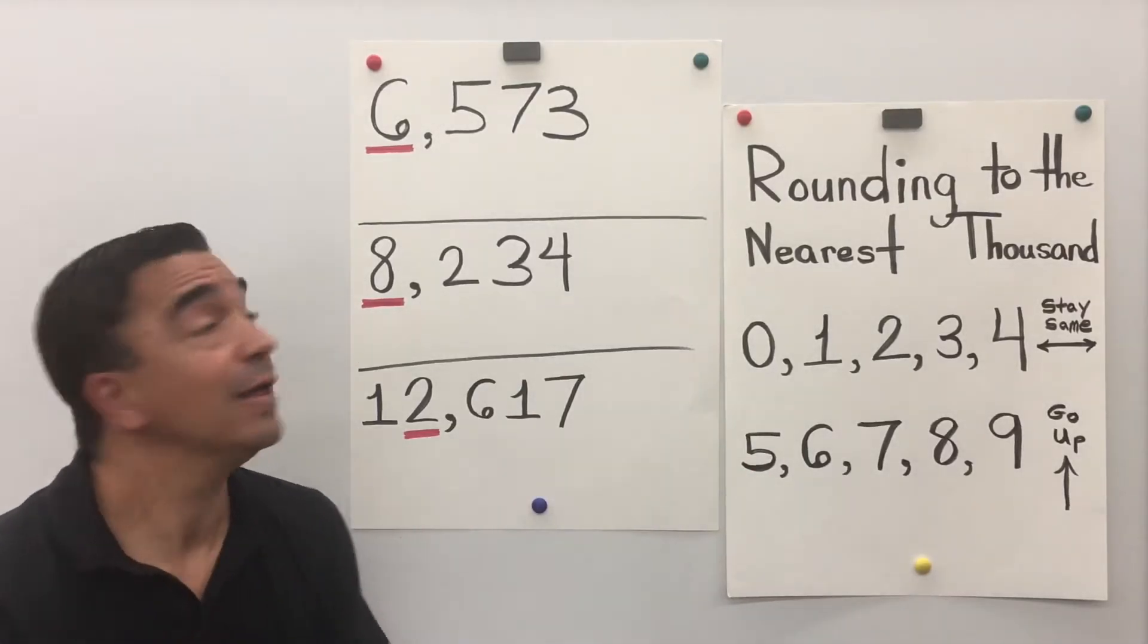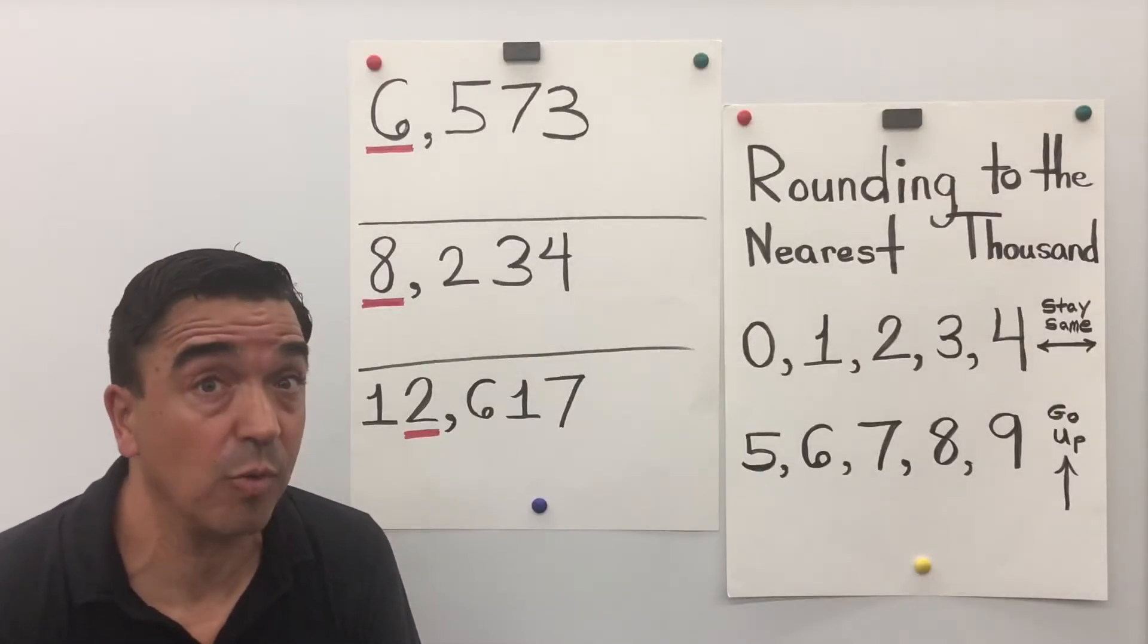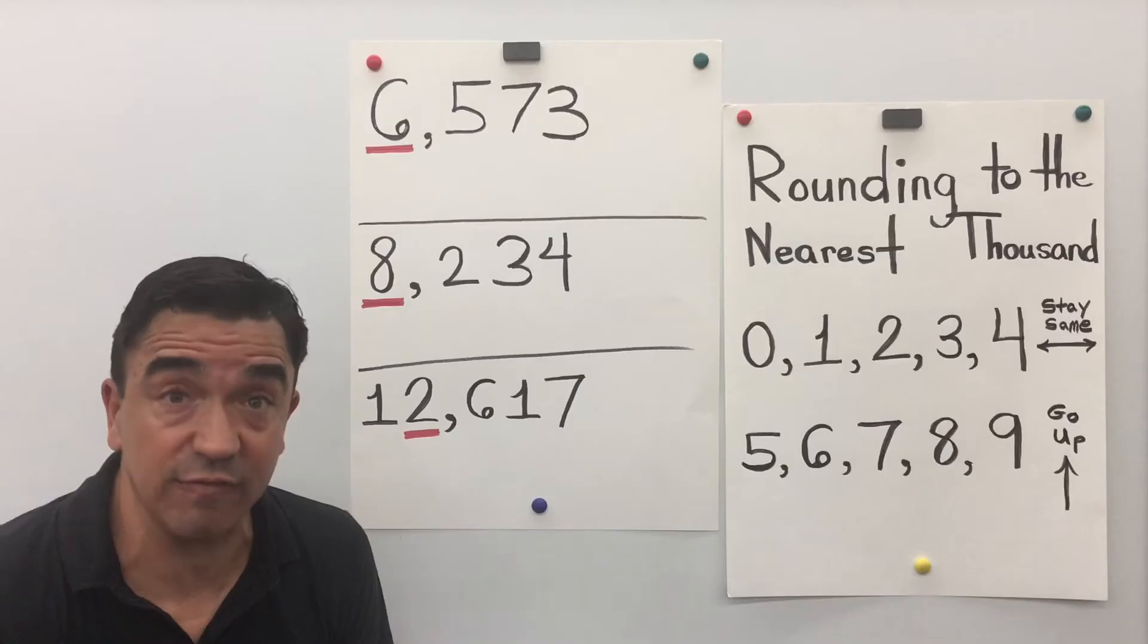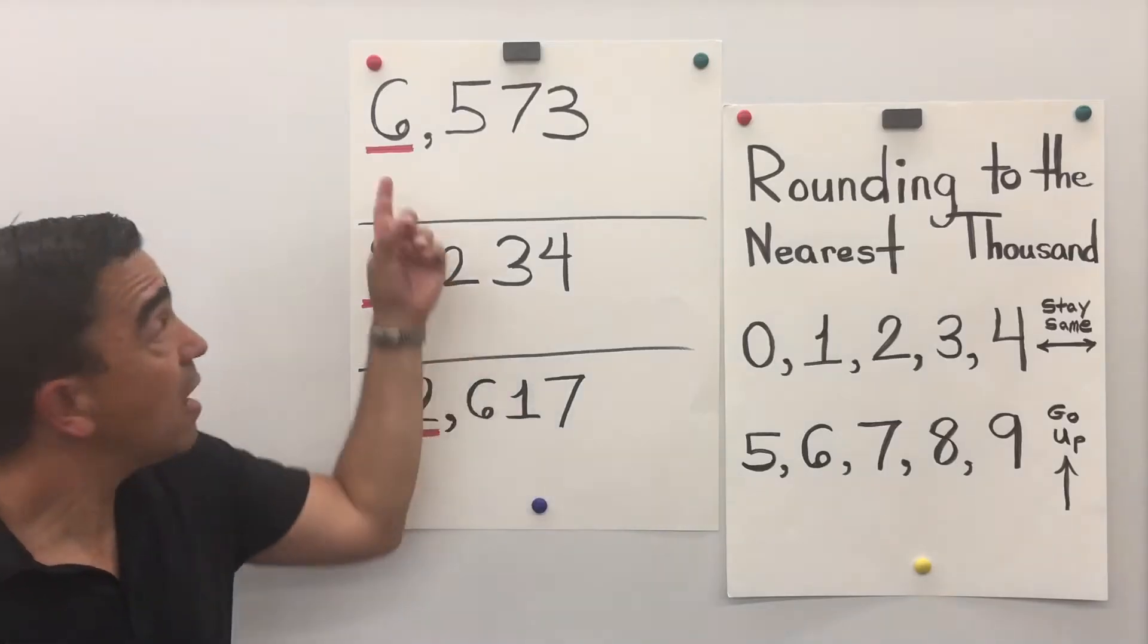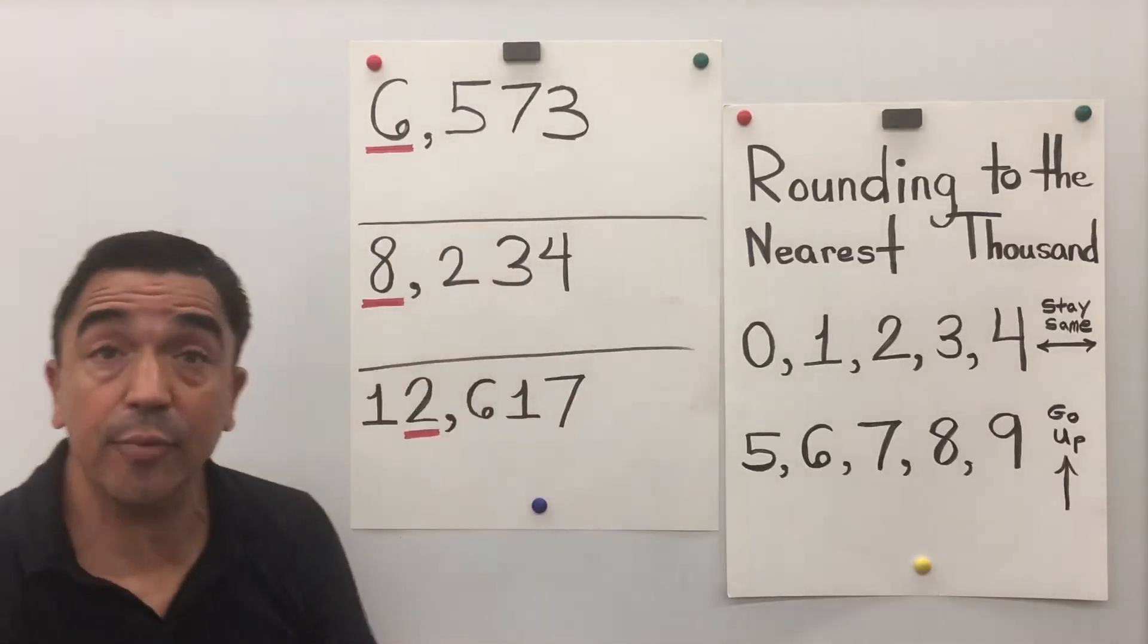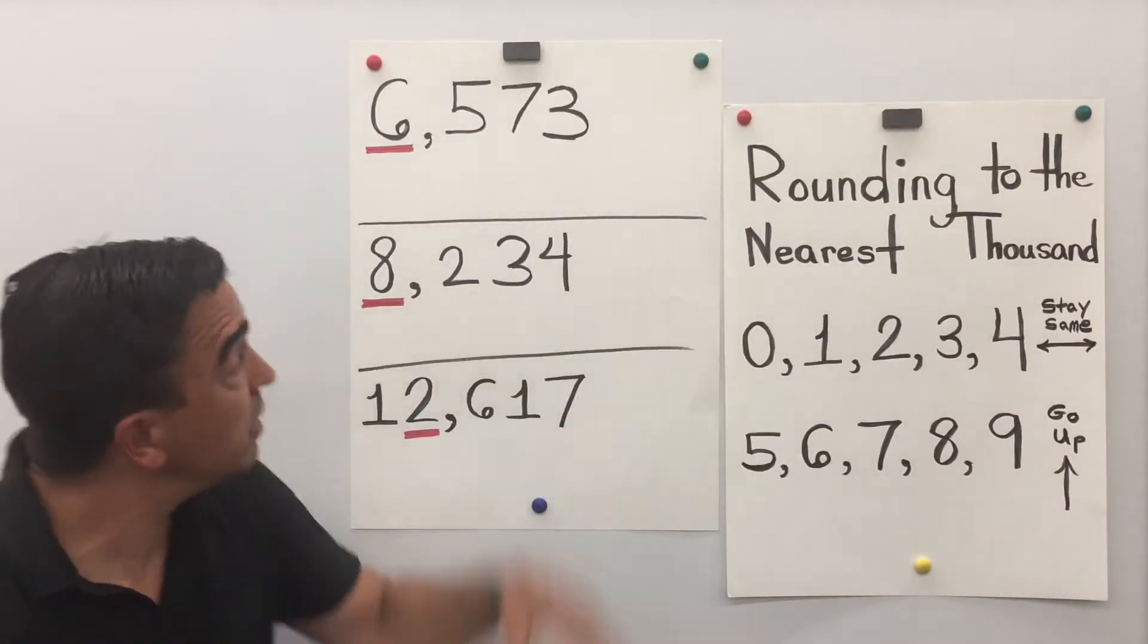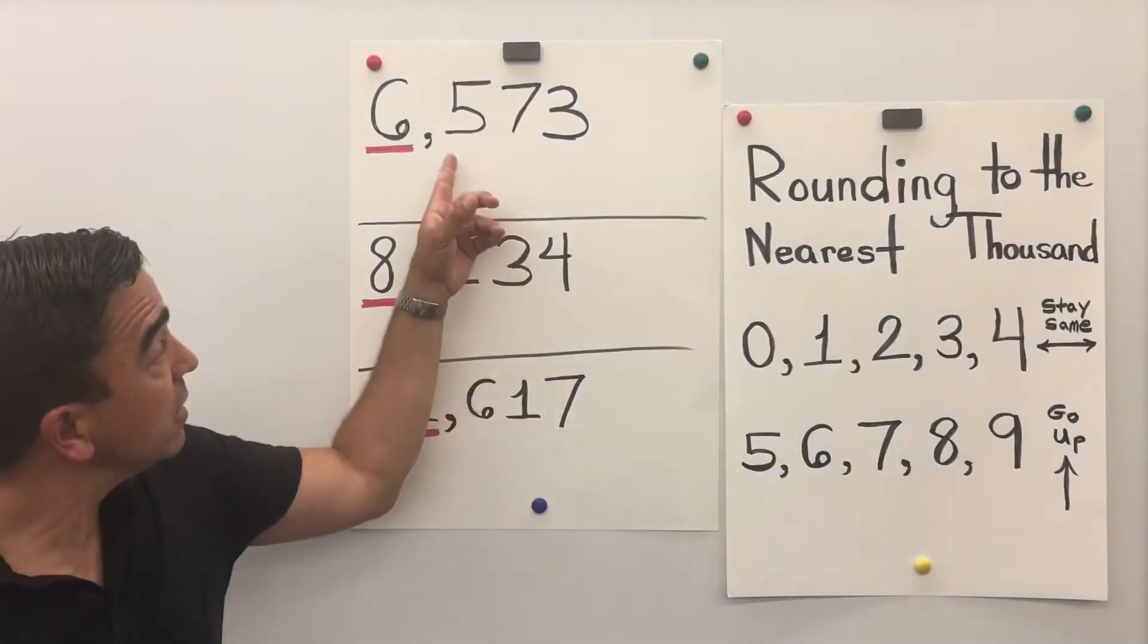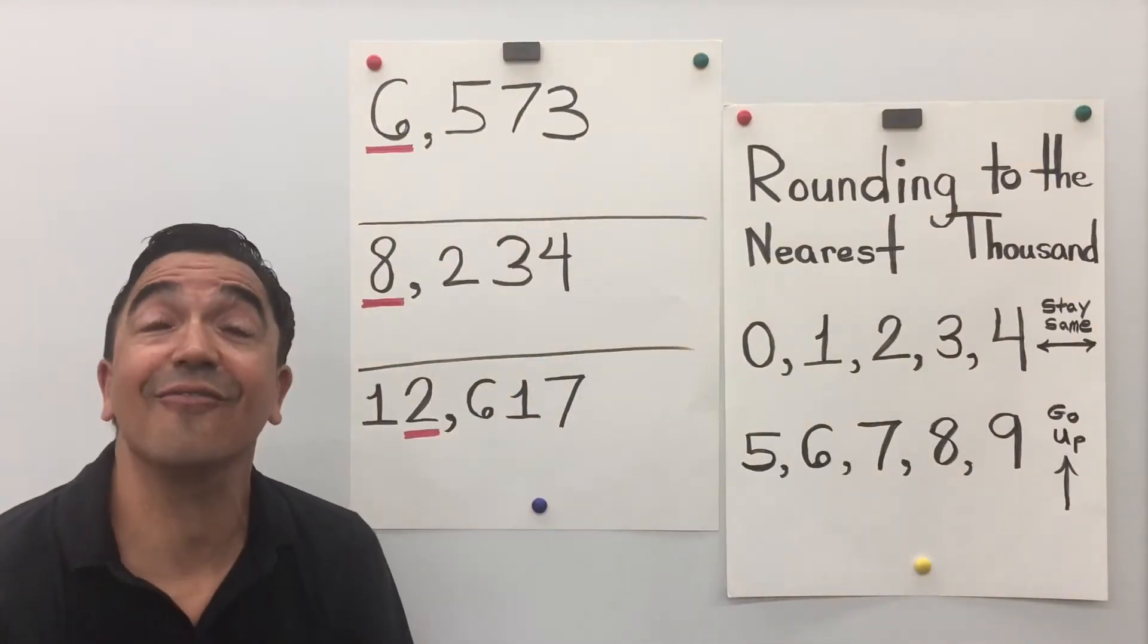Okay, let's start with problem number one, 6,573. The 6 is in the thousands place. So the number in the hundreds place is going to tell the 6 what to do. The number is 5.